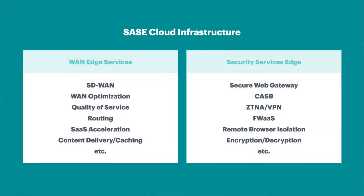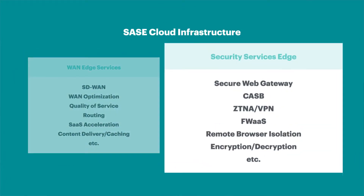What Gartner has done recently is come out with the term SSE, which is Security Service Edge. The way to think about SSE is it is the security side of SASE, and it encompasses lots of different security functionality — things like CASB, Secure Web Gateway, ZTNA or Zero Trust Network Access, Remote Browser Isolation, cloud firewall — the list goes on and on.